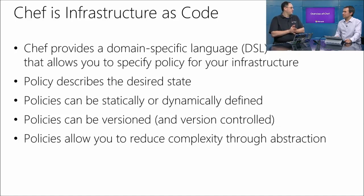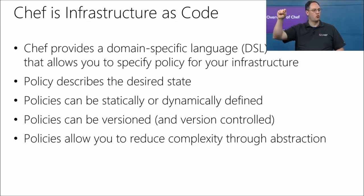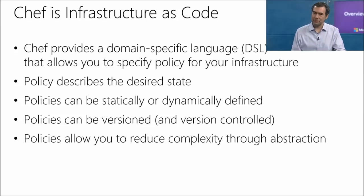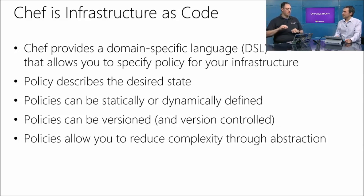One of the great things about Chef is versioning. We can version policies — like how your models can evolve with your application. We can version all of those policies, and we can constrain environments so that version one will be running in production, UAT will be version one but less than version two, and development can be whatever — maybe already in version three. You can use that type of versioning to control the migration of things through your environment, leveraging the same repository of cookbooks across your total infrastructure but constrained to only use what's needed in a particular place.